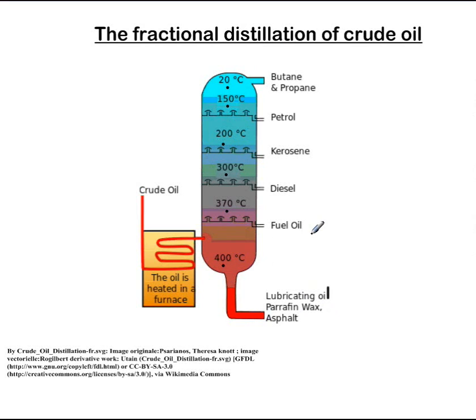Going higher up, at around 370 degrees Celsius we get fuel oil, also called bunker oil, which is used to power engines in ships and aircraft. It's basically the crude oil that is also transported by tankers, which can create huge oil spills when a catastrophe happens.